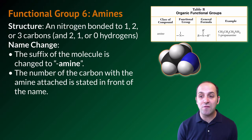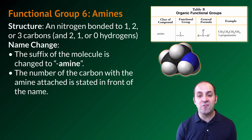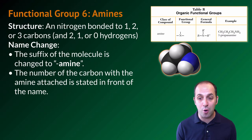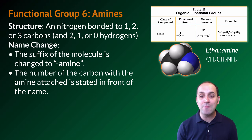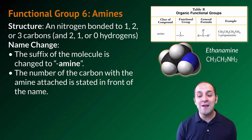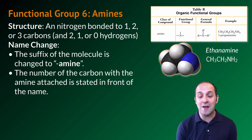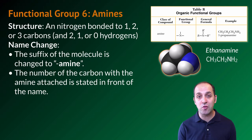The example given on reference table R is 1-propanamine, where the amine is attached to the first carbon in what would otherwise be a propane molecule. The example I'm showing you here is ethanamine, where the amine is attached to one of the two carbons in what would otherwise be an ethane molecule, which is why we don't have to number the carbons in ethanamine.